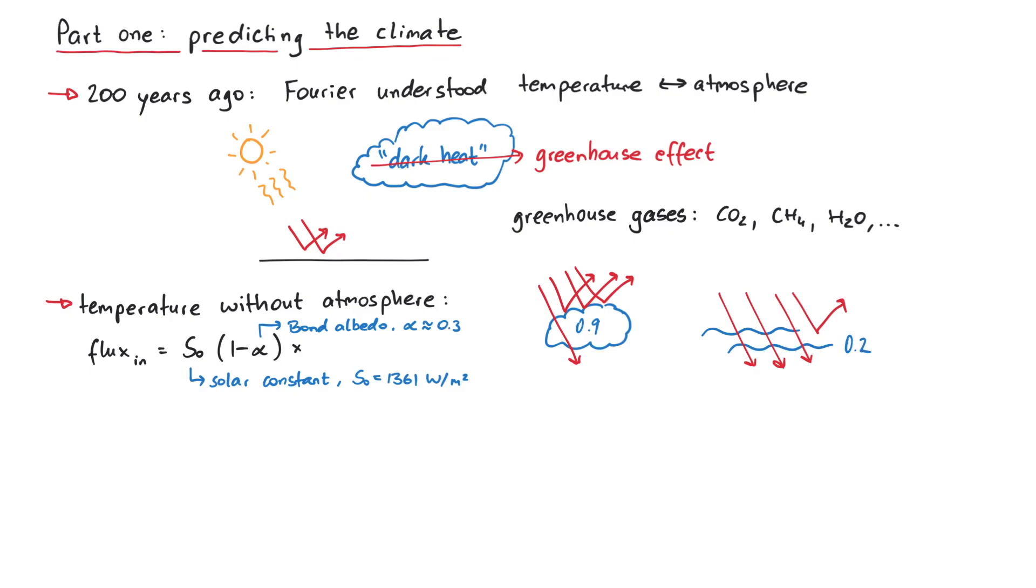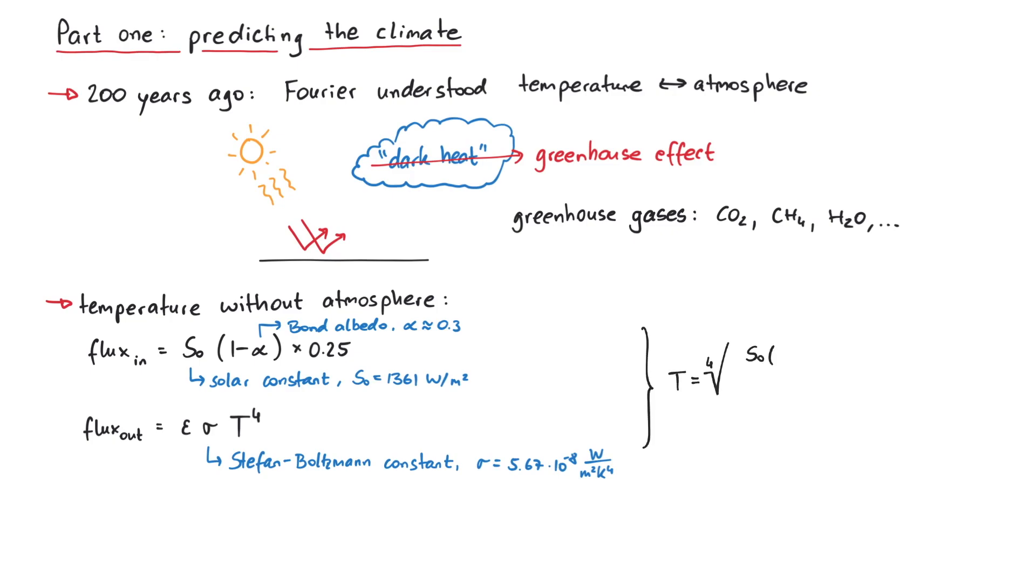We also divide this by four, since only one-half of our planet receives this energy at any time, and we also have to account for the Earth being round. The outgoing energy is determined by the Stefan-Boltzmann law, hence we get temperature to the power of four, the Stefan-Boltzmann constant sigma, and the emissivity epsilon, which we assume to be one in the perfect black body for simplicity. All of this gives us a temperature of around minus 18 degrees Celsius.